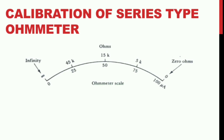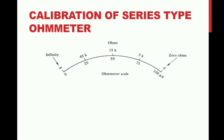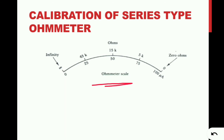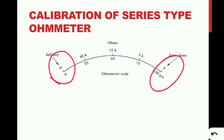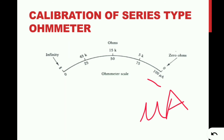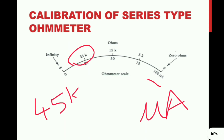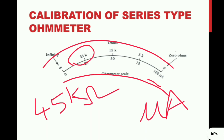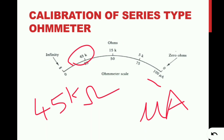We can see the ohmmeter scale. The infinity mark is at one end. We use a microammeter and can calculate the resistance. For example, here we use 45 kilohms and the microammeter is 100 microamperes.